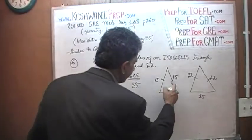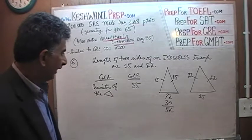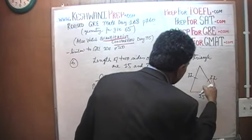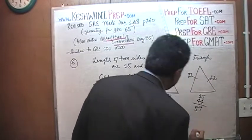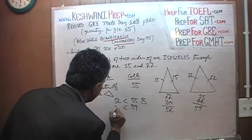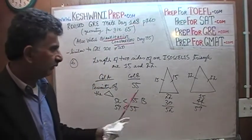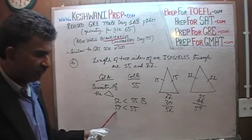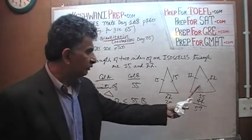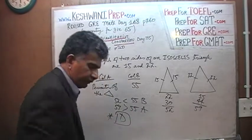Let's find the perimeters. The perimeter of the first case is 15 plus 15 is 30, plus 22 gives us 52. 52 is less than 55, so the answer would be B in that case. For the second case, 22 plus 22 is 44, plus 15 is 59. If 59 happens to be the case, then 59 is greater than 55 and the answer switches to A. Because we do not know which of these two scenarios we are dealing with, the answer could be either A or B, and therefore the correct answer is D.